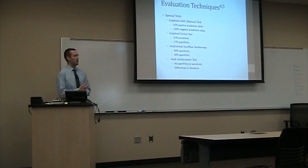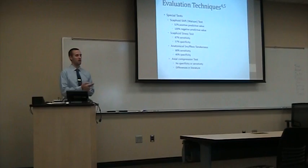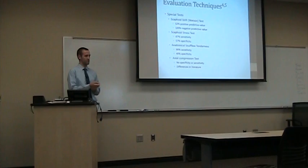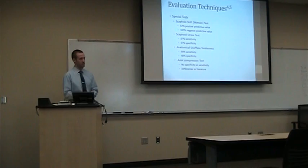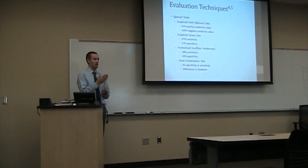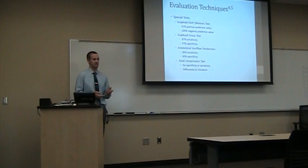Evaluation techniques that we can do. First, the scaphoid shift, also known as the Watson test — I'll let you guys read the sensitivity and specificity values. Briefly, the examiner places one hand around the metacarpals and one hand on the scaphoid. The examiner moves the wrist into ulnar deviation and extension, then into radial deviation and flexion, while putting pressure on the scaphoid and feeling for a clunk, click, or pain.